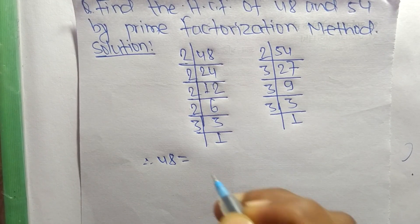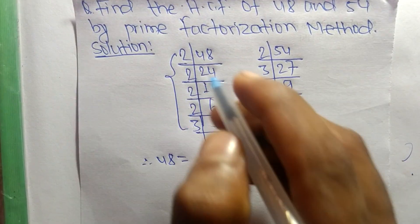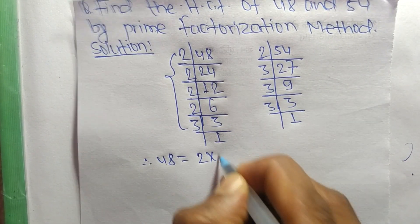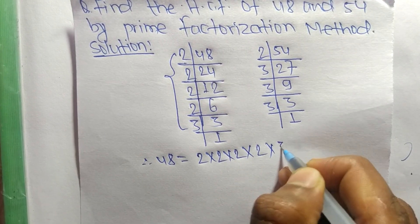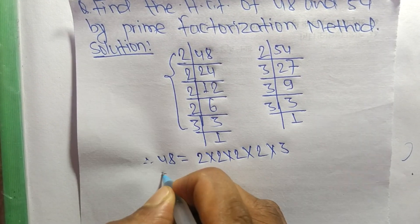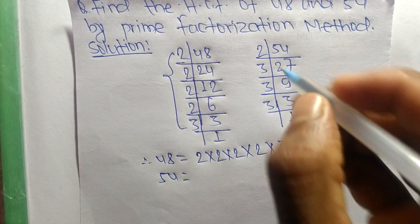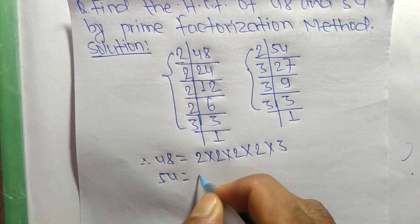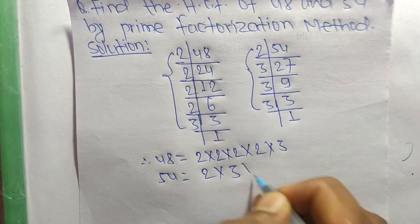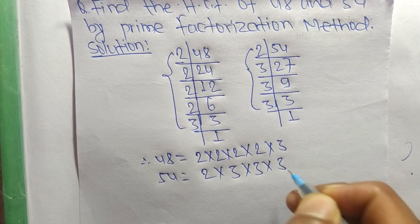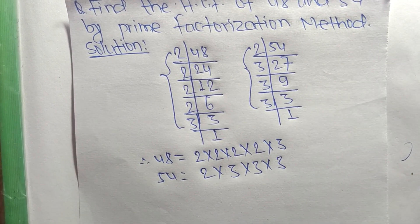48 equals 2 times 2 times 2 times 3. Similarly, 54 equals 2 times 3 times 3 times 3. Now we select the common factors in this prime factorization.